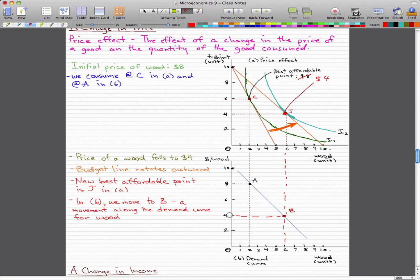From that point, we looked for $4 for the wood because it dropped to $4. And then we have a horizontal line and a vertical line. And the intersection would be point B.